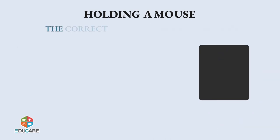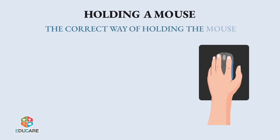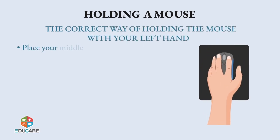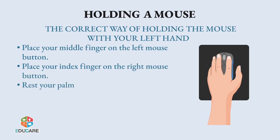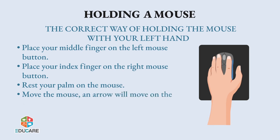The correct way of holding the mouse with your left hand is shown in the picture. Place your middle finger on the left mouse button. Place your index finger on the right mouse button. Rest your palm on the mouse. Move the mouse and an arrow will move on the screen.